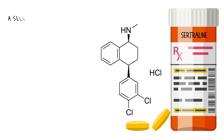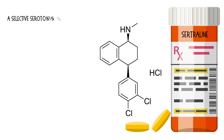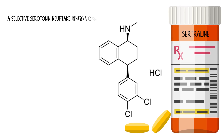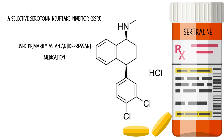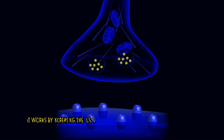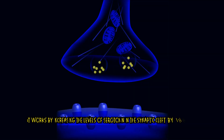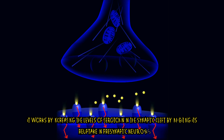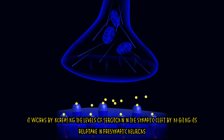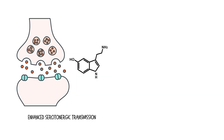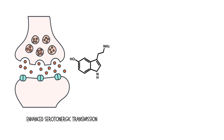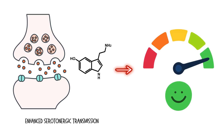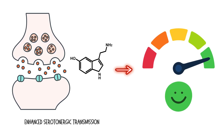Sertraline is a selective serotonin reuptake inhibitor used primarily as an antidepressant medication. It works by increasing the levels of serotonin in the synaptic cleft by inhibiting its reuptake in presynaptic neurons. This enhances serotonergic neurotransmission, which is believed to improve mood and emotional stability.